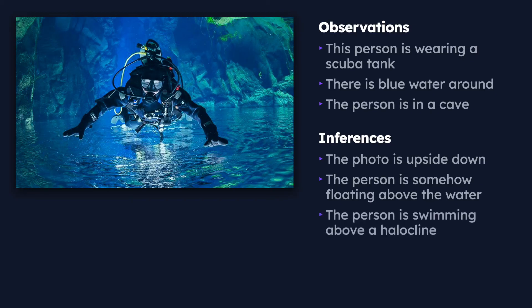We might also infer that this person is swimming above something known as a halocline. This happens to be the correct inference — if you were to collect more detailed observations, you would see they are floating within clear water that is less salty than the water beneath. The difference in salinity has separated the water layers, making it look like the person is floating in air when in reality they are still fully underwater. That's the very simple difference between an observation and an inference. Thanks for watching.